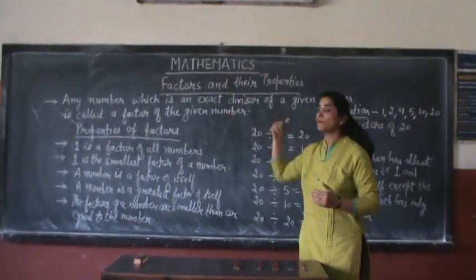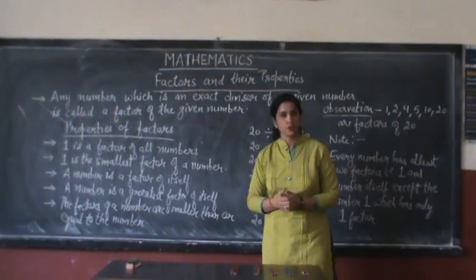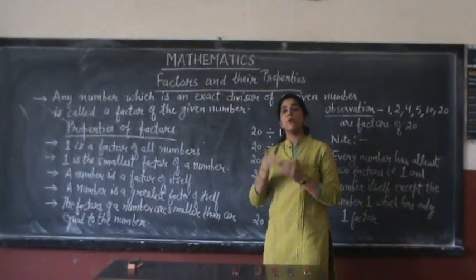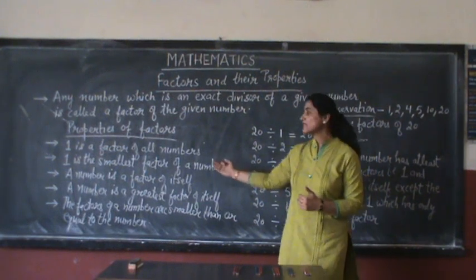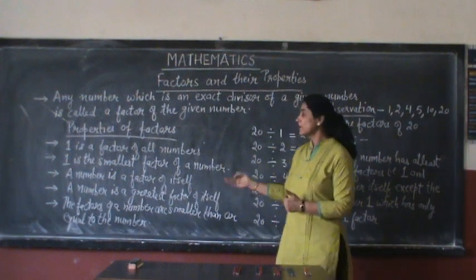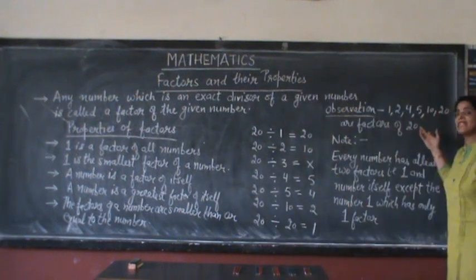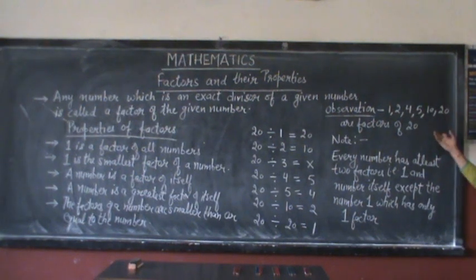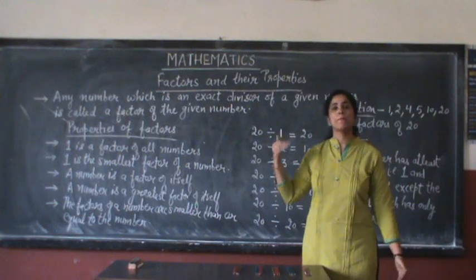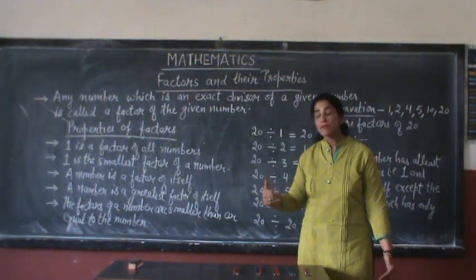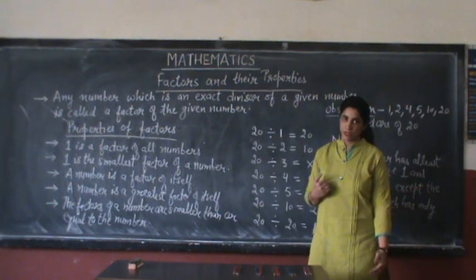Now let us observe the properties of the factors. The first property says that one is a factor of every number, which means one divides every number exactly. Also, one is the smallest factor of every number. Further, a number is a factor of itself — which means 20 is a factor of 20, that 20 divides 20 exactly — which means every number is a factor of itself, and every number is the greatest factor of itself.